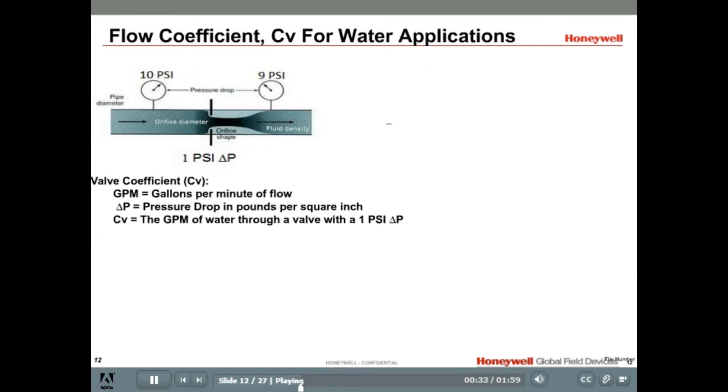If the CV is too large, the valve will operate most of its time at a very small opening and can result in cavitation that can damage the valve and very poor control. If the CV is too small, it may not provide enough flow to the application resulting in insufficient heating or cooling.